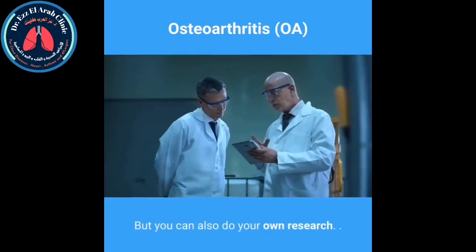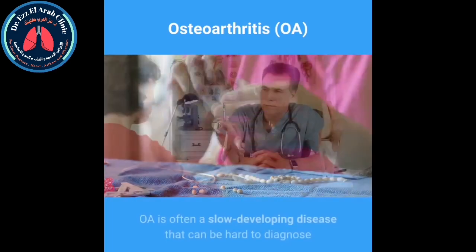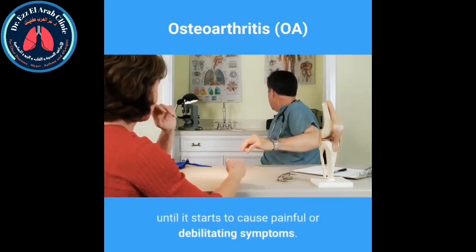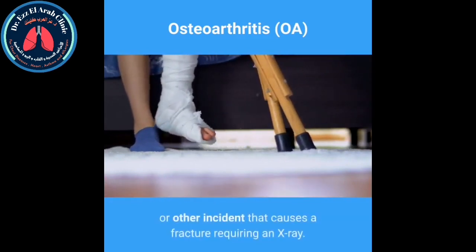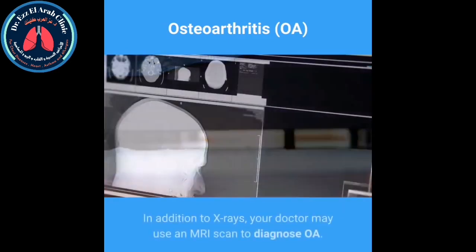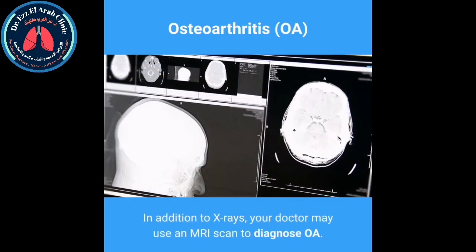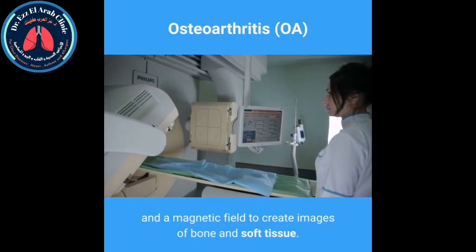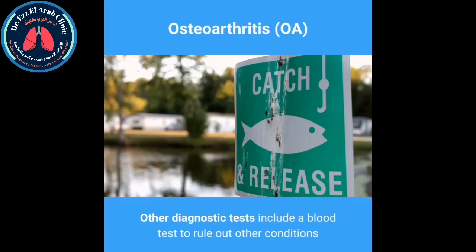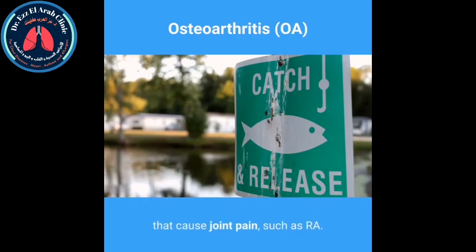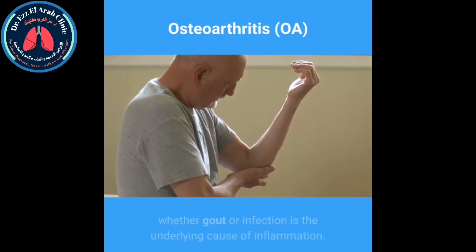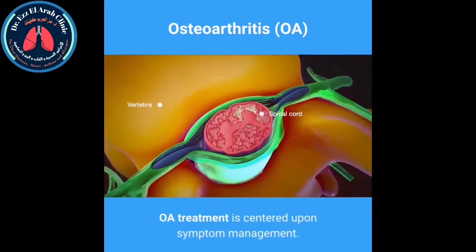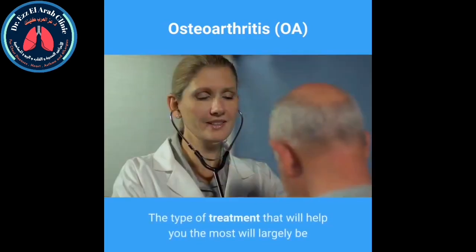Osteoarthritis diagnosis. OA is often a slow-developing disease that can be hard to diagnose until it starts to cause painful or debilitating symptoms. Early OA is often diagnosed after an accident or other incident that causes a fracture requiring an X-ray. In addition to X-rays, your doctor may use an MRI scan, which uses radio waves and a magnetic field to create images of bone and soft tissue. Other diagnostic tests include a blood test to rule out other conditions such as RA, and a joint fluid analysis to determine whether gout or infection is the underlying cause of inflammation.